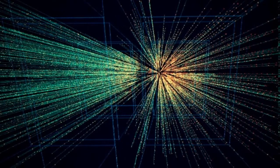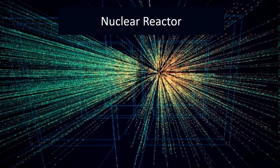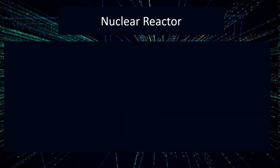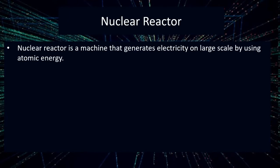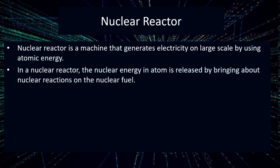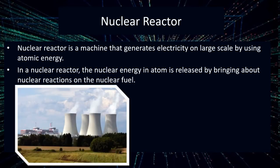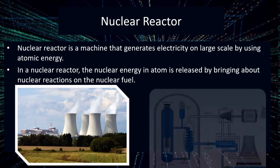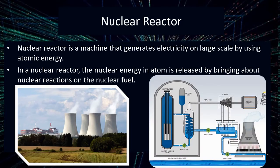Uranium-235 is used in the generation of electricity. A nuclear reactor is a machine that generates electricity on a large scale. In a nuclear power plant, nuclear reaction takes place and water is converted into steam. This steam is used to rotate turbines, which generate electricity.